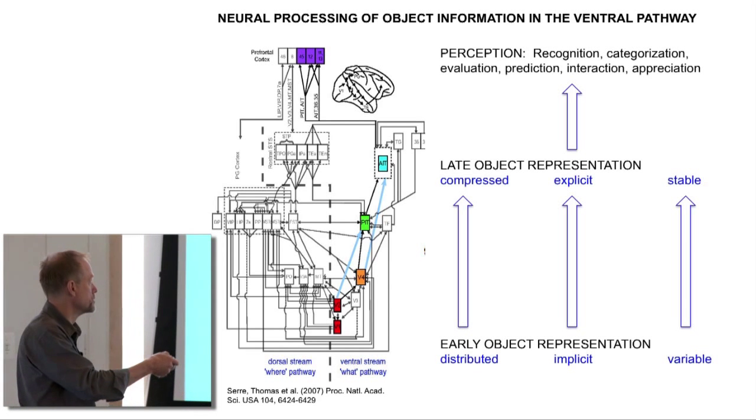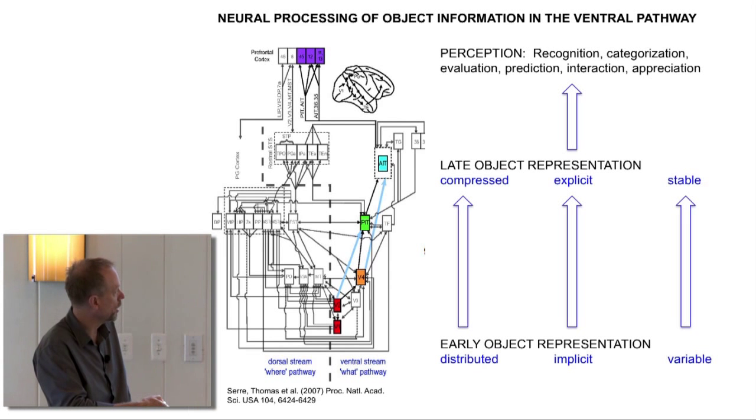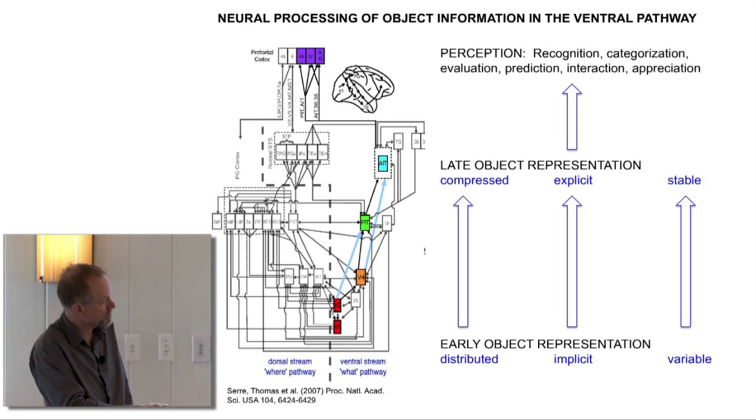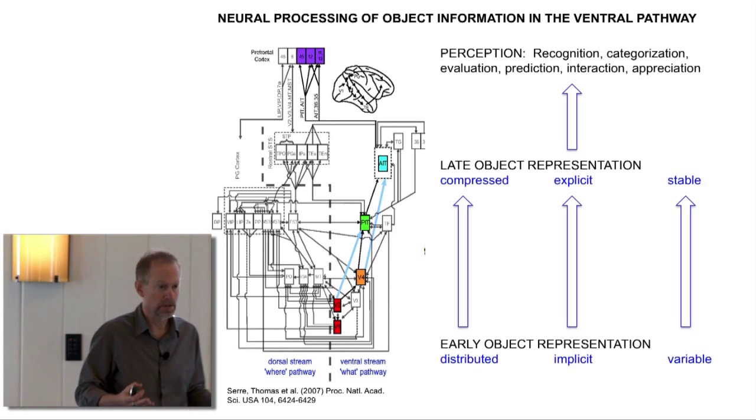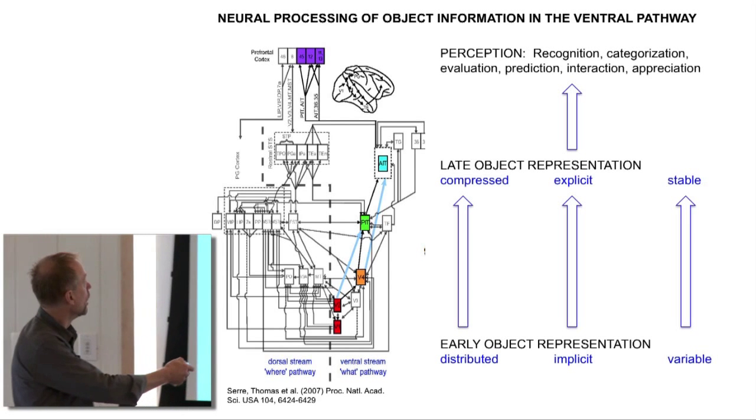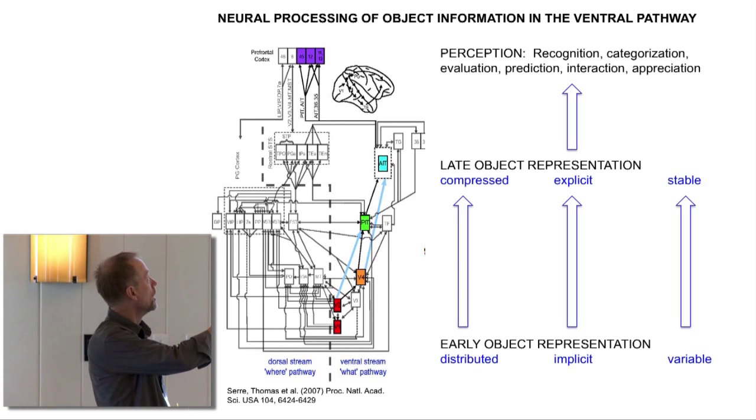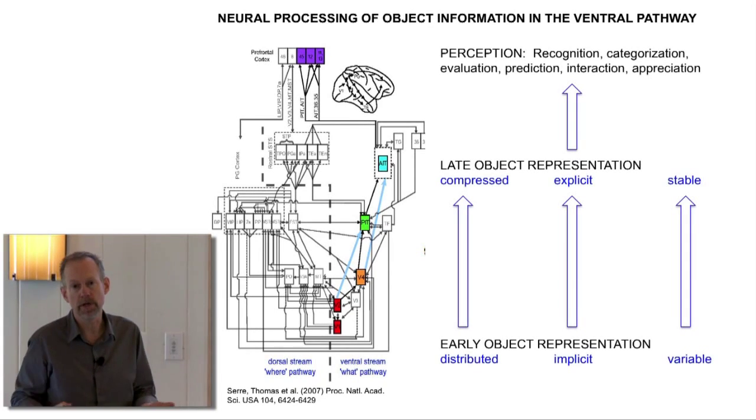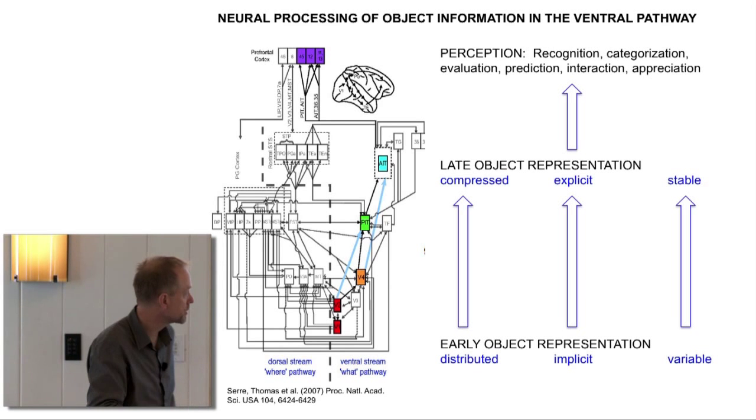What I see as one of the major jobs of the ventral pathway is through step-by-step transformation to turn a very distributed signal into one that's much more compressed, compressed enough that you could store something in memory, compressed enough that prefrontal cortex could access that information over a reasonable number of axons.